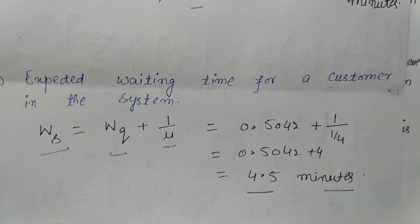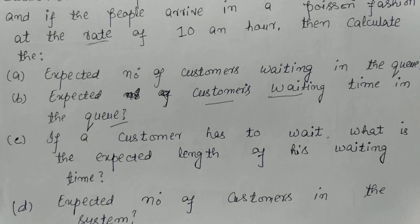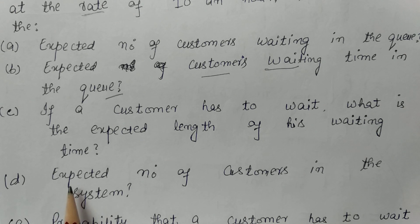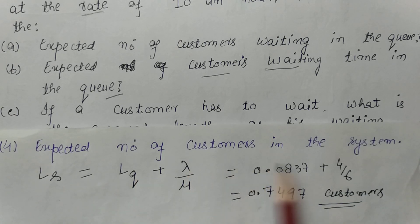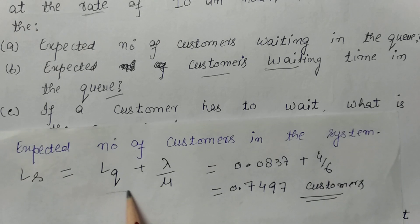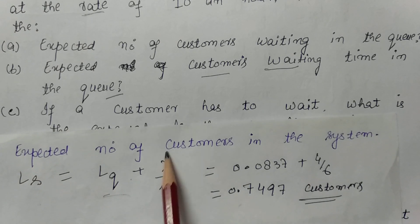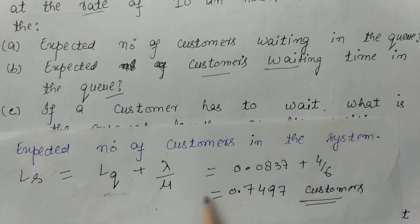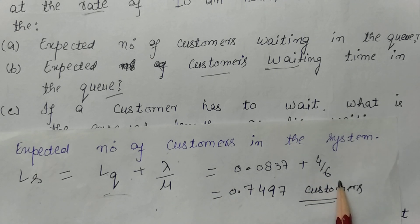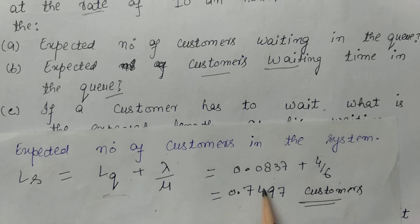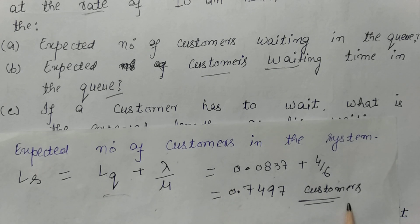Next, the expected number of customers in the system: L equals Lq plus λ/μ equals 0.0837 plus (1/6)/(1/4) equals 0.0837 plus 4/6 equals 0.0837 plus 0.6667, giving L approximately equals 0.7497 customers in the system.